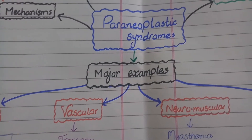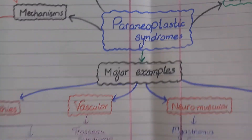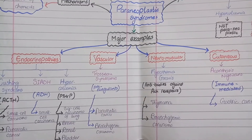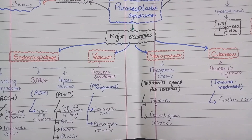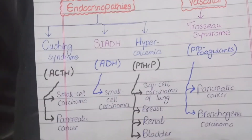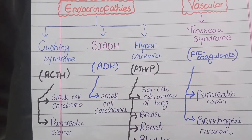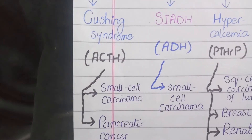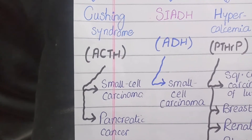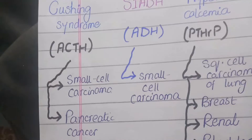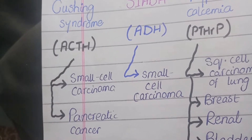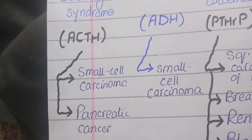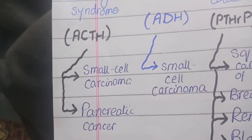Now let's move to some major and high-yield examples of paraneoplastic syndrome. These can be divided into four major categories: endocrinopathies, vascular, neuromuscular, and cutaneous. The first and most important endocrinopathy is Cushing syndrome. Cushing syndrome is caused by release of ACTH — when neoplastic cells release ACTH, it causes release of cortisol from the adrenal gland, and Cushing syndrome occurs as a paraneoplastic effect. The tumors that cause this include small cell carcinoma of the lung and pancreatic cancer.